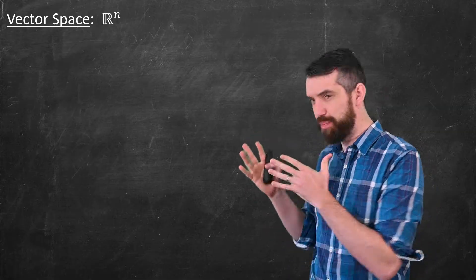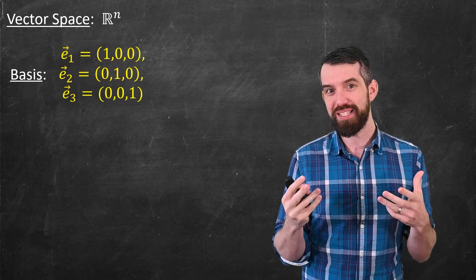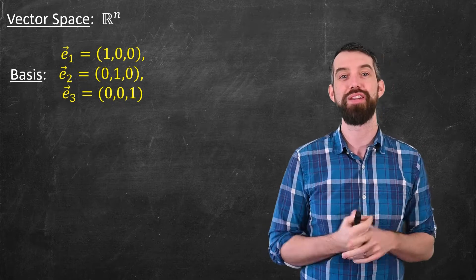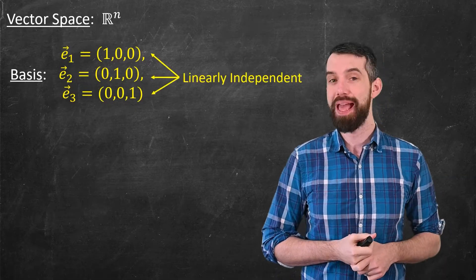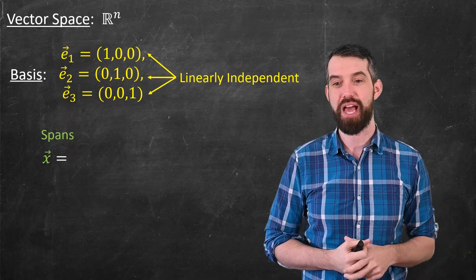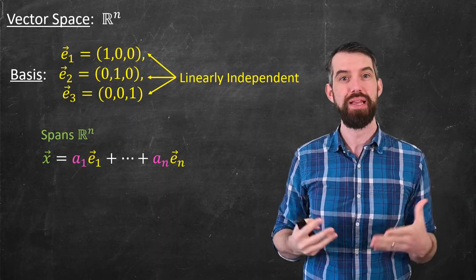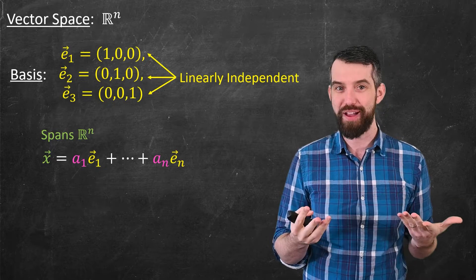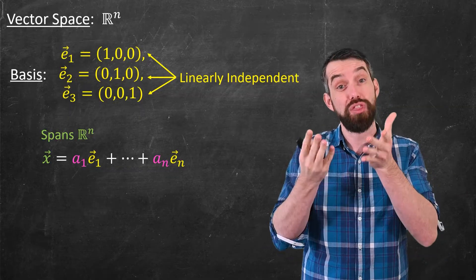Let's recall a few more things about the vector space Rn before returning to Fourier series. Vector spaces like Rn have a basis. In particular, the basis for R3 of (1,0,0), (0,1,0), and (0,0,1) forms a basis — a set of vectors that is linearly independent, meaning you can't write one as a linear combination of the others, but that also spans the entire space. Any vector x in Rn can be written uniquely in terms of the basis vectors; for example, the vector (1,2,3) equals 1 times the first basis vector plus 2 times the second plus 3 times the third.